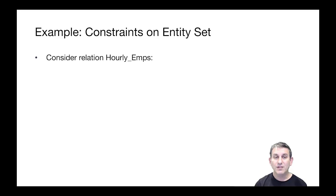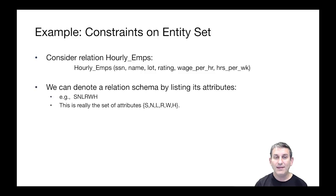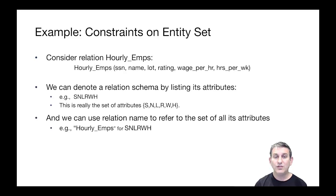Let's look at some examples of functional dependencies on an entity set. Consider the relation hourly_employees, which has this schema: social security number, name, lot (which you can think of as a parking lot), a rating, a wage per hour, and hours per week. We can denote this relational schema by listing its attributes using the first letter of each: S-N-L-R-W-H. This is a set of attributes we'll denote as a string. We can also use the relation name hourly_emps as shorthand, synonymous with S-N-L-R-W-H.